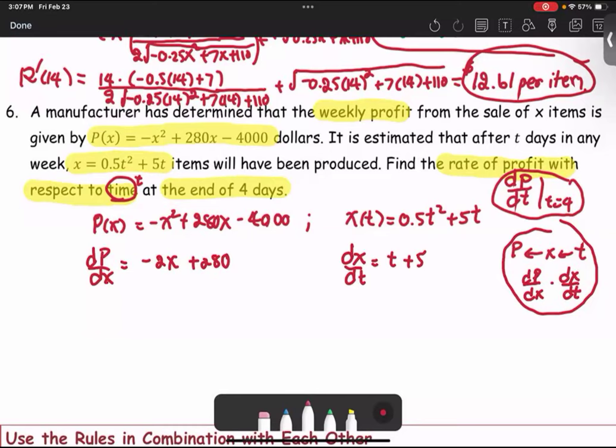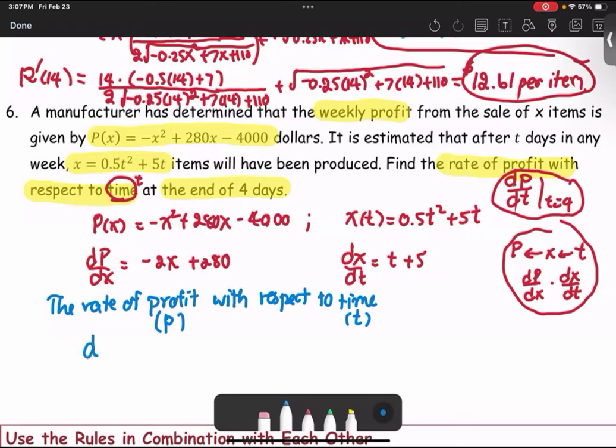The rate of profit with respect to time - I'll put a note here. Time is T, profit is P. The notation dP/dt is formed by the product of the derivative of P with respect to X times the derivative of X with respect to T.